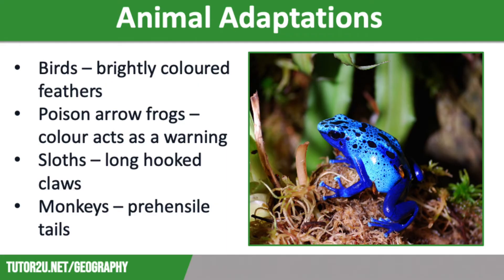On the screen we have a picture of a poison arrow frog. These tiny creatures use their bright colours to warn predators that they are highly poisonous, so they should be left alone. In fact, indigenous tribes in the rainforest often use the poison at the end of their arrows when they are hunting.